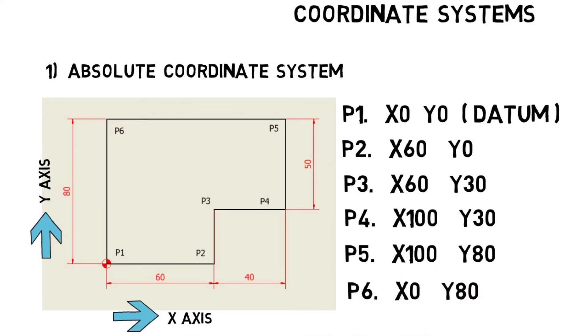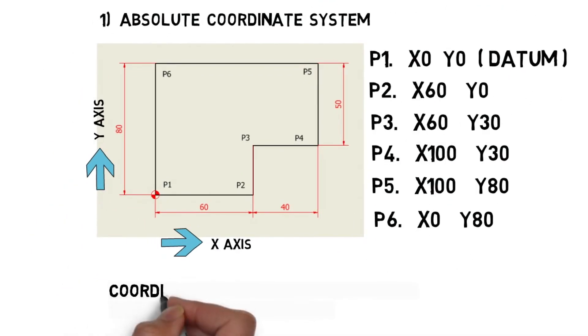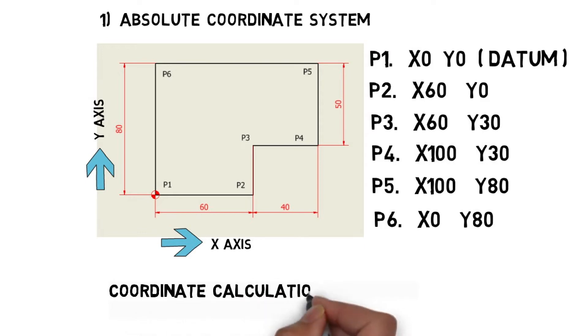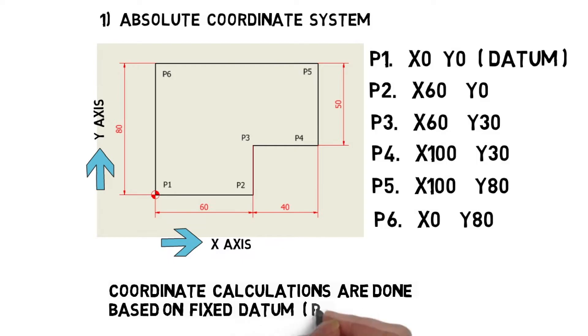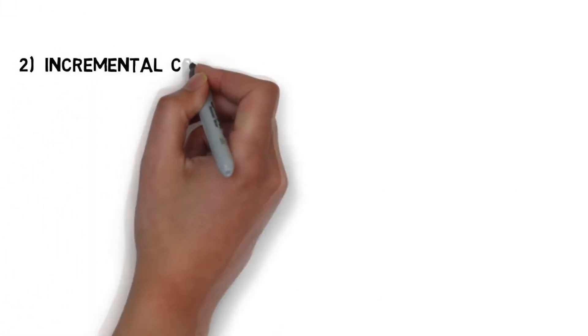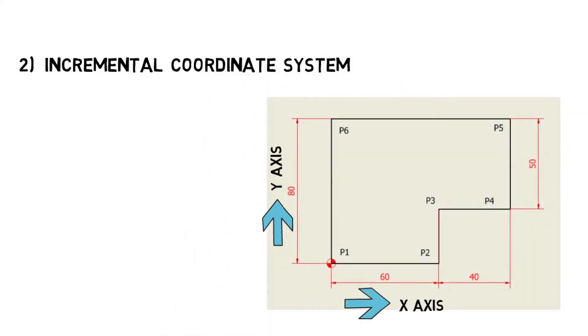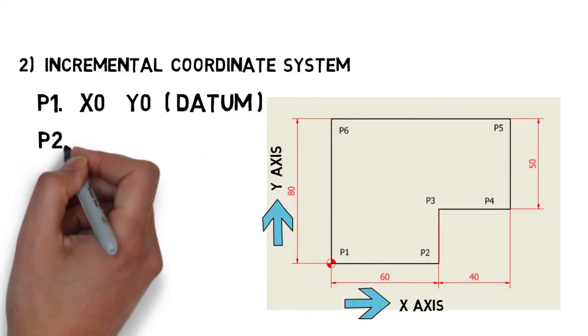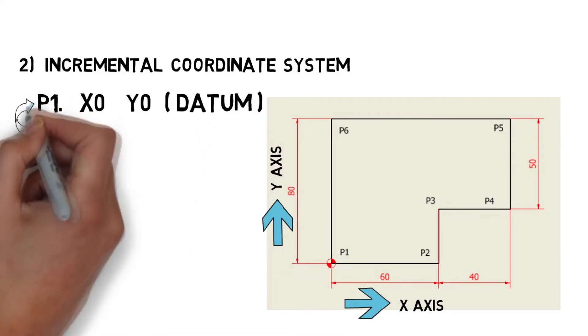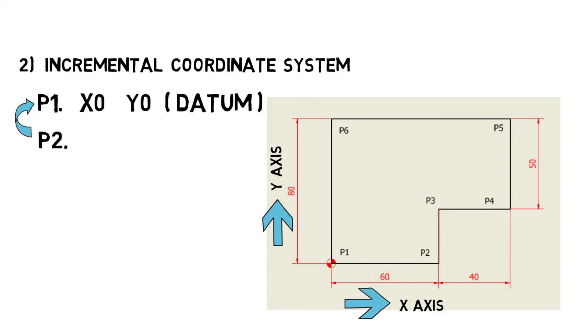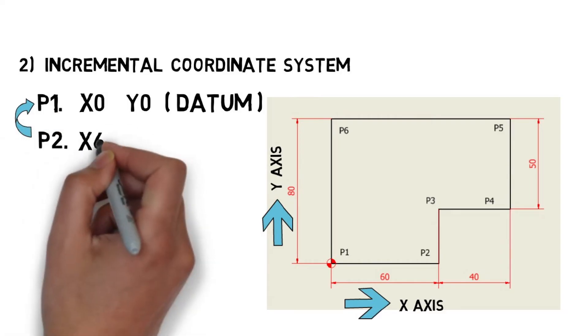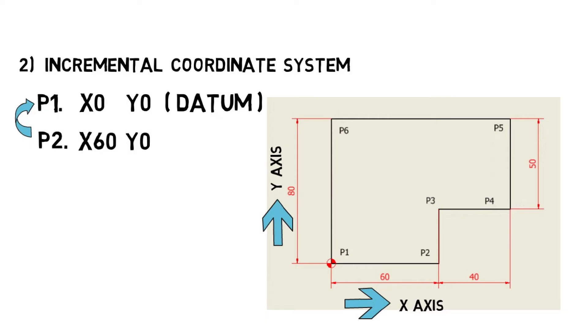I think now you got a clear idea about absolute coordinate system. All the coordinate points are calculated from a fixed origin. Now we will look into second method that is incremental coordinate system. We take same previous drawing for this calculation. P1 is X0, Y0 because it is the origin. Now P2, for calculating P2, P1 is the origin reference point. So value is X60 and Y0.